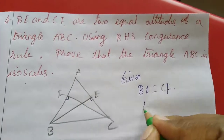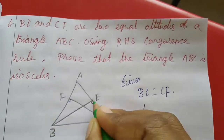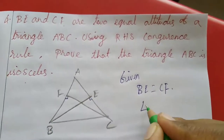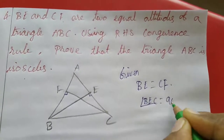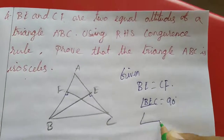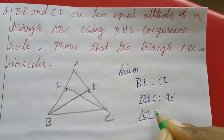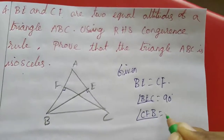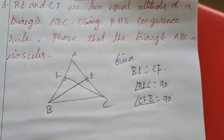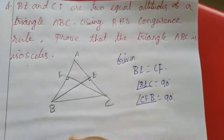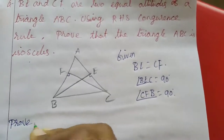First I am writing given: BE equal to CF, and since these are altitudes, it will form 90 degrees. So angle BEC equal to 90 degrees as well as angle CFB equal to 90 degrees. This one they gave. We want to prove that ABC is an isosceles triangle.